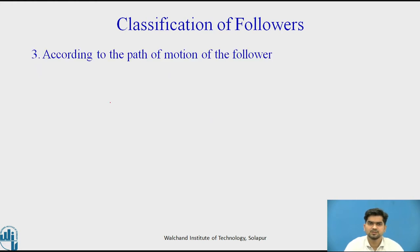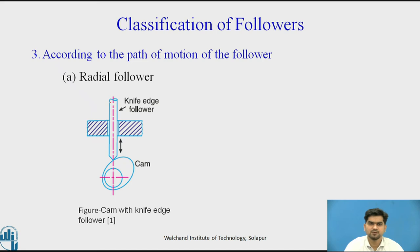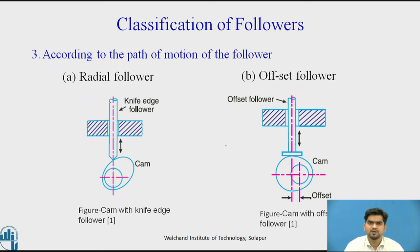The third classification of followers is according to the path of motion. The first type is the radial follower, in which the follower moves radially along the center of the Cam — the axis of the follower is along the axis of the Cam. The second type is the offset follower, in which the follower position is offset by a certain distance from the axis of the Cam. If there is a problem of side thrust, we can prefer the offset follower.